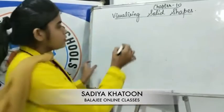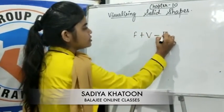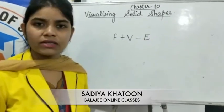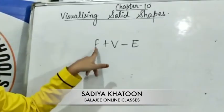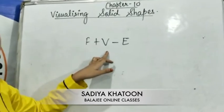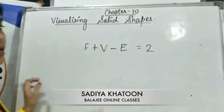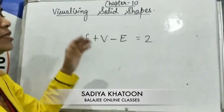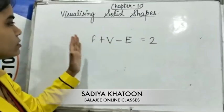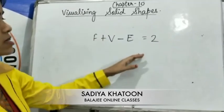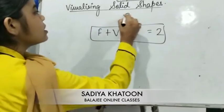The next is Euler's formula. It shows the relationship between faces, vertices, and edges. The formula is: Faces plus Vertices minus Edges equals 2. You can take any shape — any cube, any polyhedron, any prism or pyramid. If you add the number of faces and vertices and subtract the number of edges, you will always get 2. This relationship is known as Euler's formula.